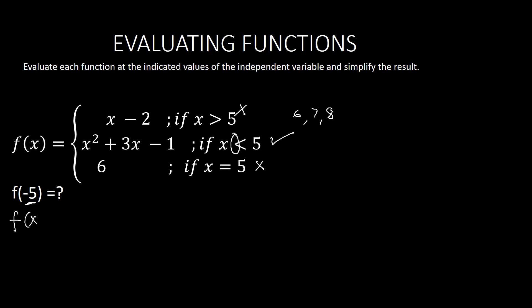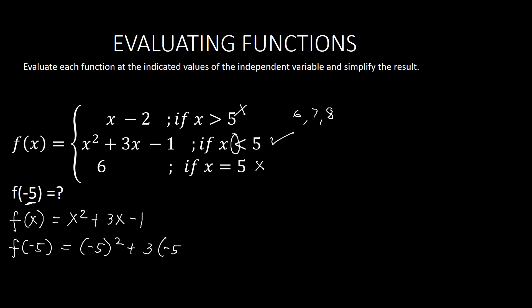We use the second function: f(x) equals x squared plus 3x minus 1. Substituting negative 5: f(negative 5) equals (negative 5) squared plus 3 times (negative 5) minus 1, which gives 25 minus 15 minus 1. That equals 9. So f(negative 5) equals 9.